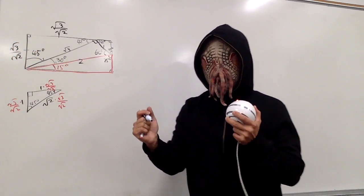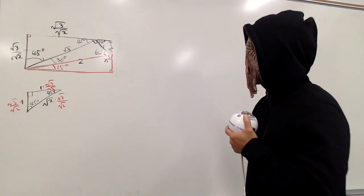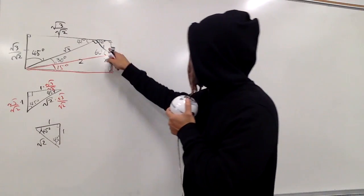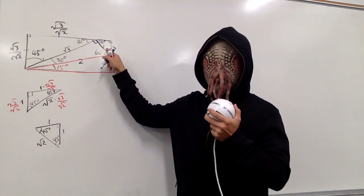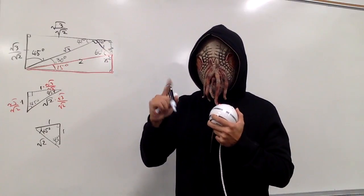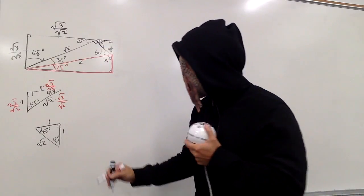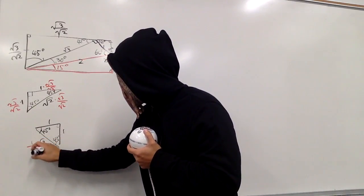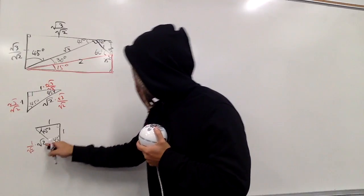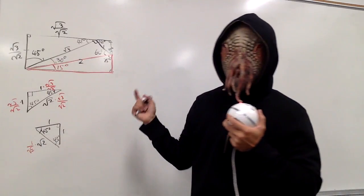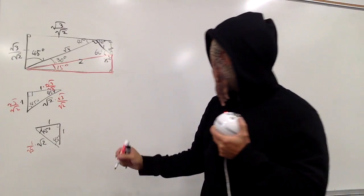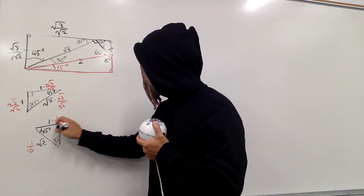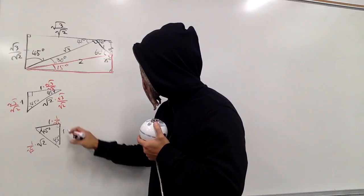That's excellent. Now here we have another triangle. But in this case, this right here is 1. So I'm just going to multiply everything by 1 over square root of 2, so that this will be the side we want.